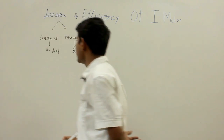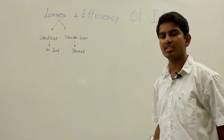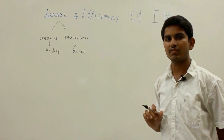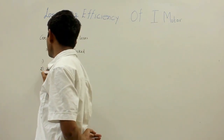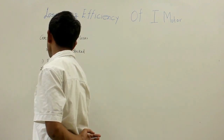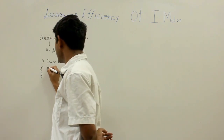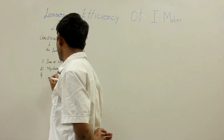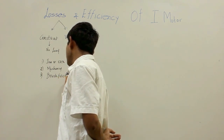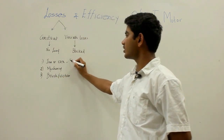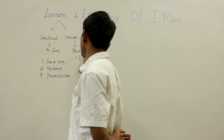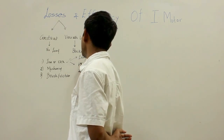Constant losses or fixed losses are those losses which remain constant throughout the normal working range of the motor. These can be further classified into three types: iron or core losses, mechanical losses, and brush friction losses. The core losses can be further classified into two types: eddy current losses and hysteresis losses.